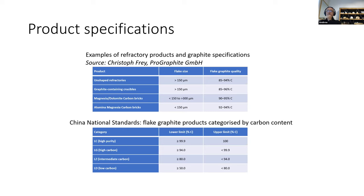In countries like China, where there's more central government control, they've got national standards. I've given some examples of percentage of carbon and category — whether they're high purity or low purity. But as a general rule, the specs are set between the user and the supplier.